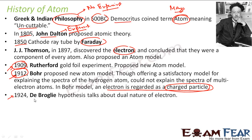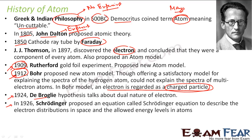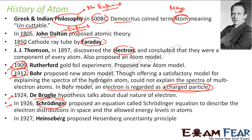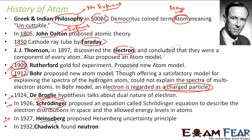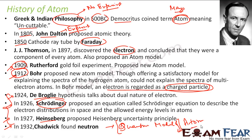In 1924, de Broglie gave a hypothesis on the dual nature of the electron. And in 1926, Schrödinger proposed an equation that can tell the path of the electron — where the electron moves — and with that they came up with the quantum model. In 1927, Heisenberg proposed the uncertainty principle. And in 1932, Chadwick found the neutron. After all this, the quantum model of atom was proposed, and that is the most widely accepted model for the atom today.